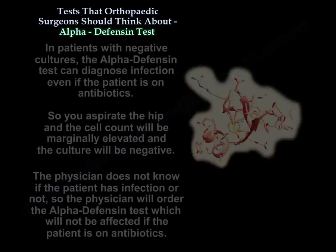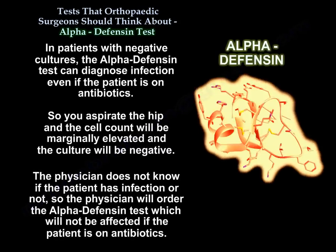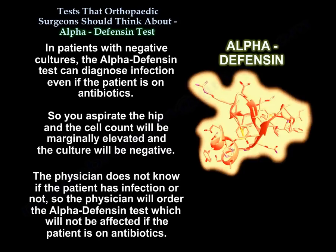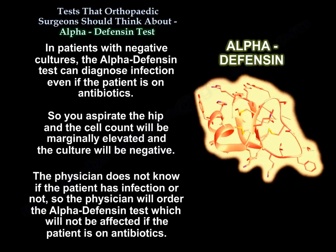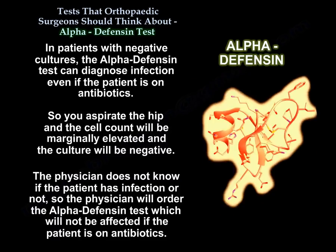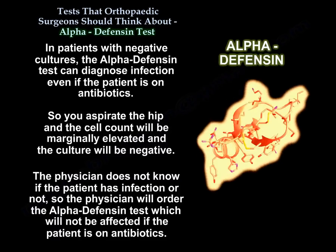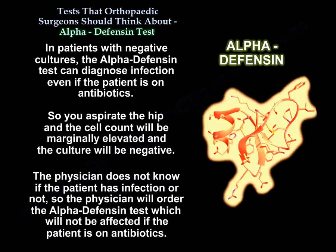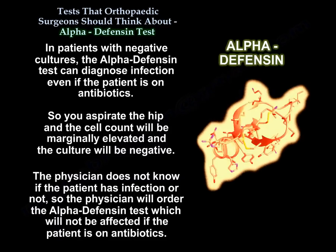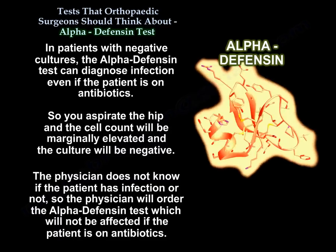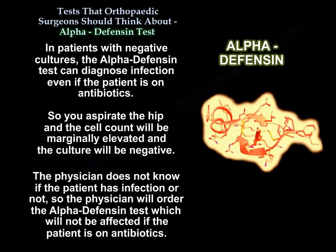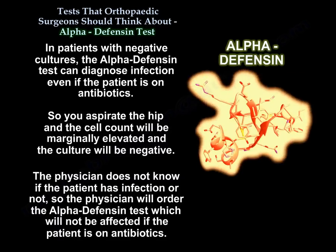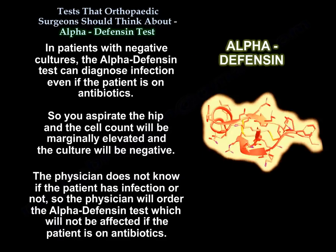In patients with negative cultures, the Alpha-Defensin test can diagnose infection even if the patient is on antibiotics. So you aspirate the hip and the cell count will be marginally elevated and the culture will be negative. The physician does not know if the patient has infection or not, so the physician will order the Alpha-Defensin test, which will not be affected if the patient is on antibiotics.